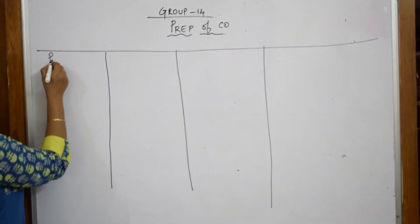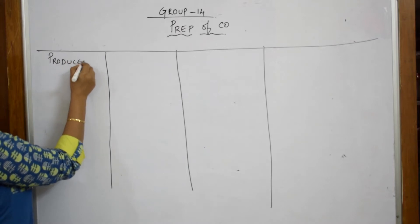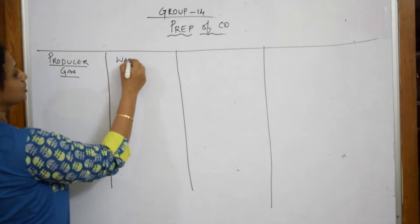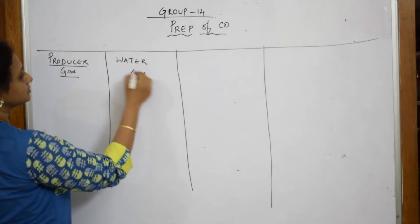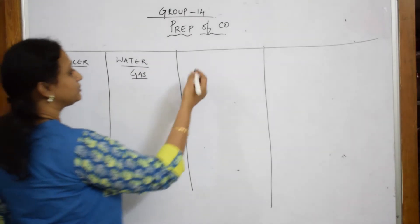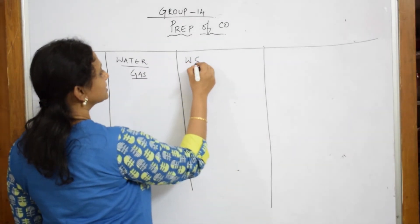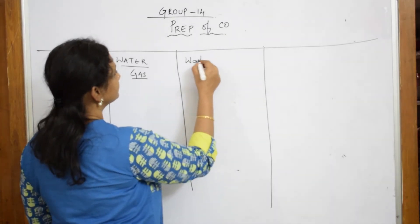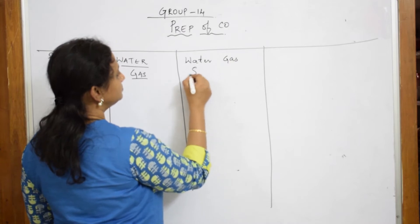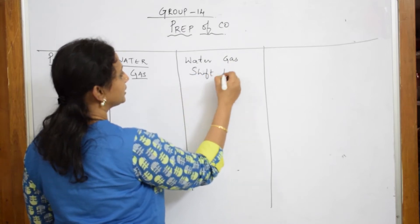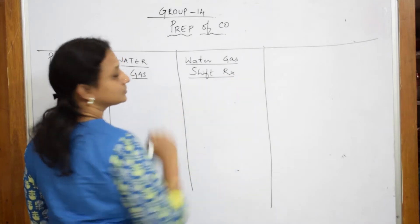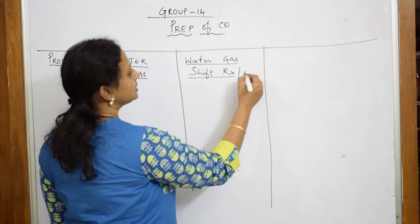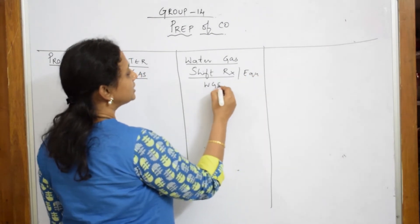First, let us learn about producer gas. After that, let us label this as water gas. Next one is water gas shift reaction — we can call it WGSE: water gas shift equation. Anything is the same equation.